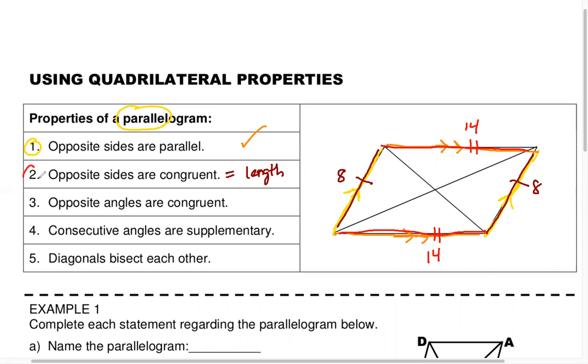So that is what's meant by opposite sides are congruent or having the same length. Check. On to property three: opposite angles are congruent.